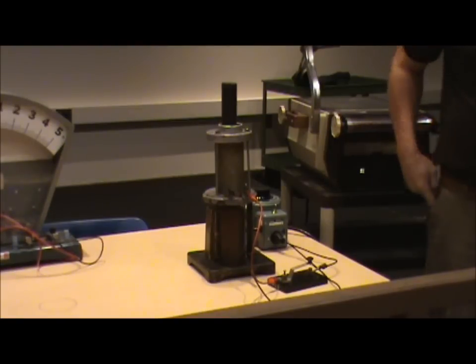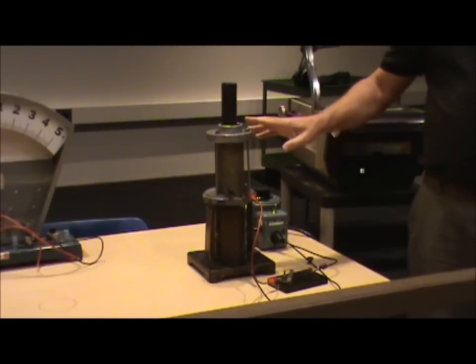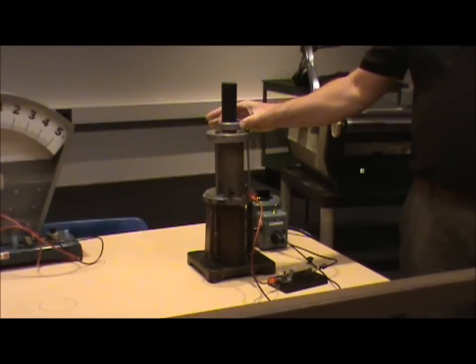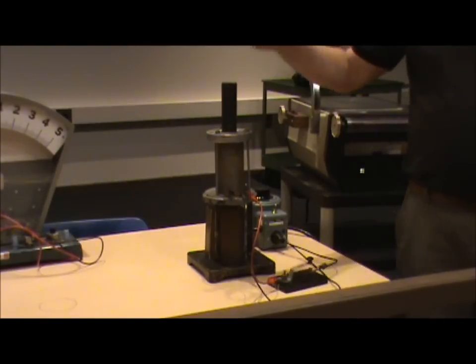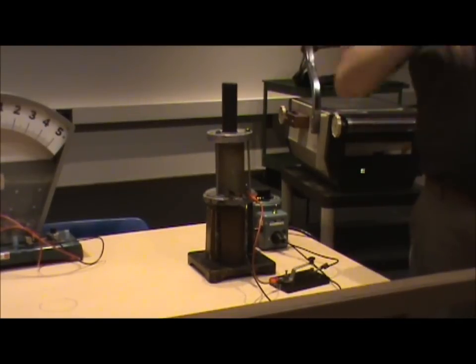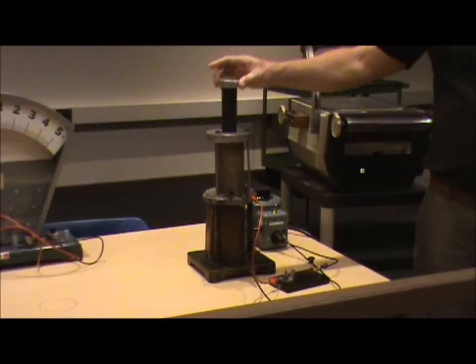Now what I'm going to do is turn the current on here, which is going to create magnetic field. As the magnetic field turns on, it's going to generate current in the loop, and then we will see what happens. I'll do that again because it's fun.